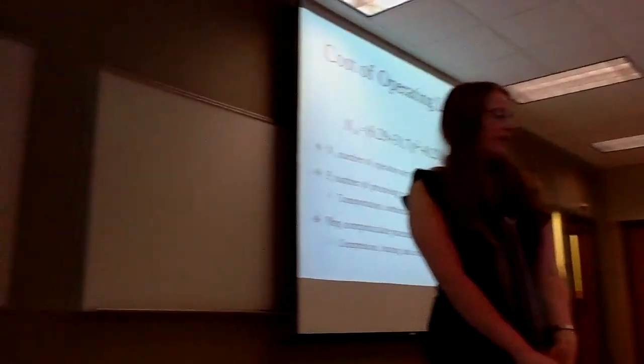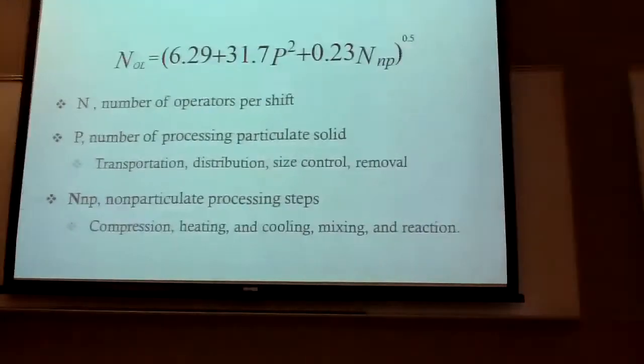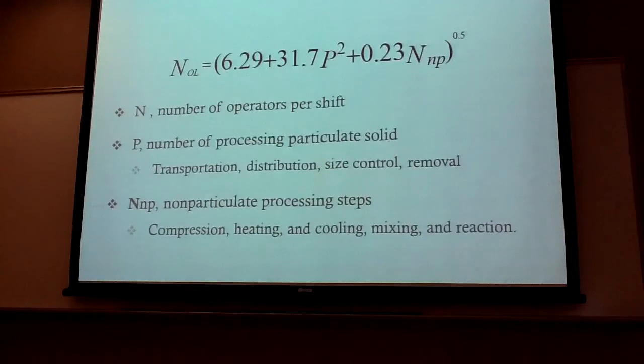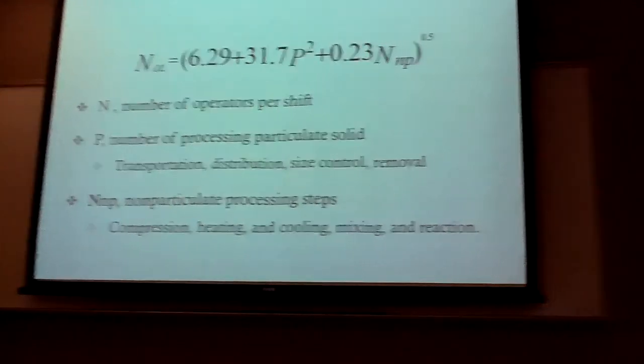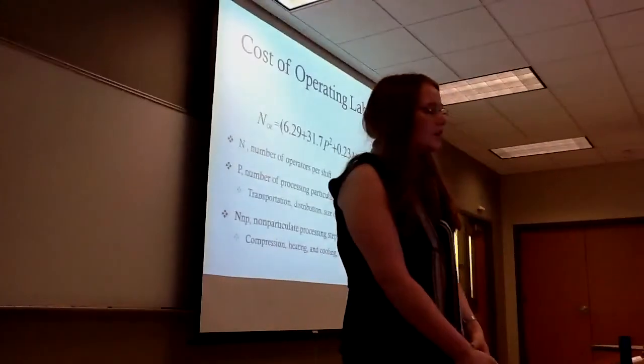So cost of operating labor. The number of operators you need per shift is equal to 6.29 plus 31.2 number of the processing particulate solids plus .23 numbers of non-particulate processing steps.